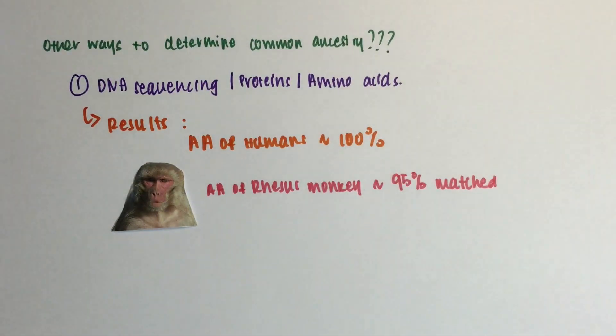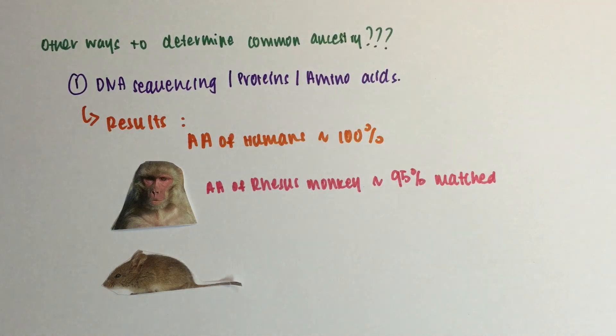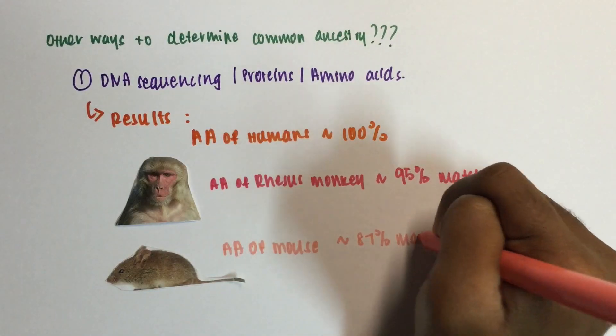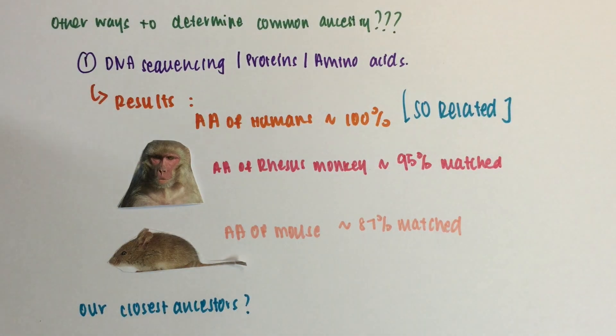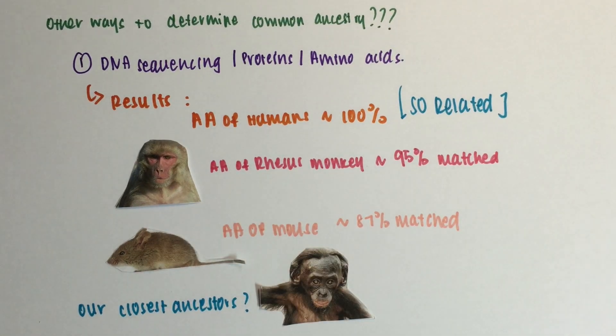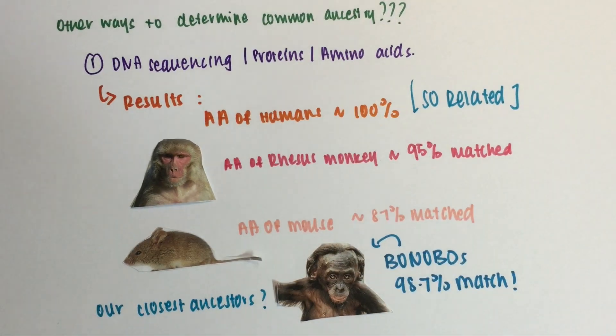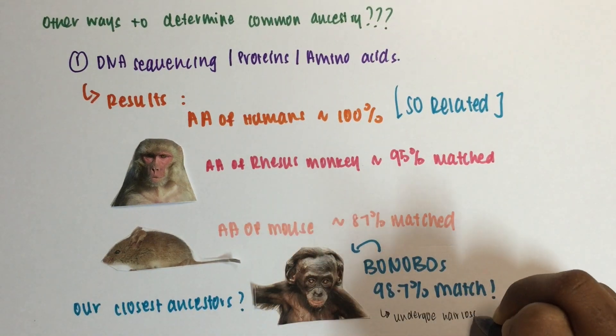These experiments show that a rhesus monkey is 95% similar to us, and a mouse is 87% similar to us. Research has also shown that our closest ancestors are the bonobos, which are 98.7% similar to us humans.